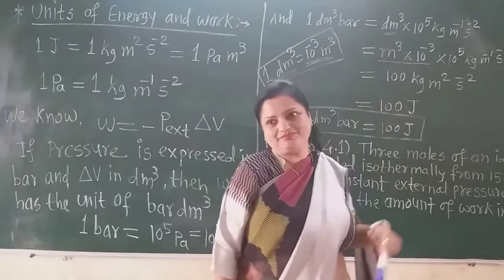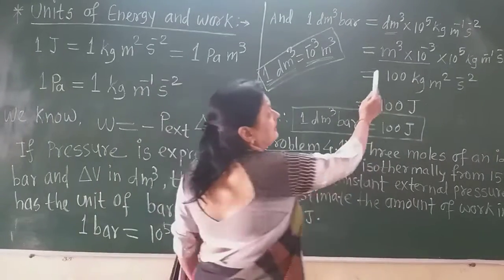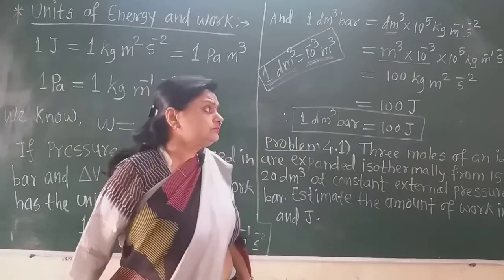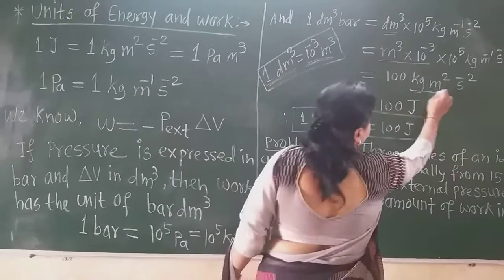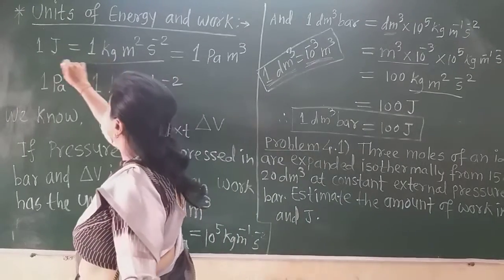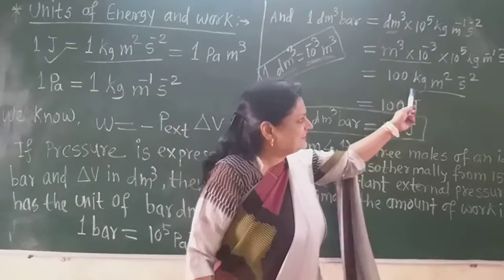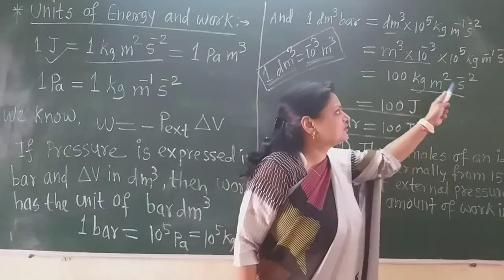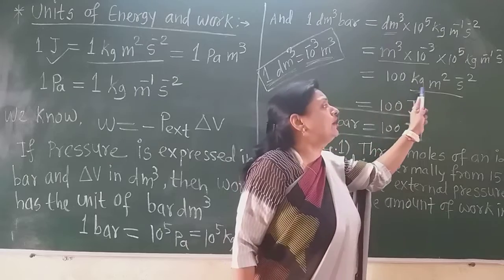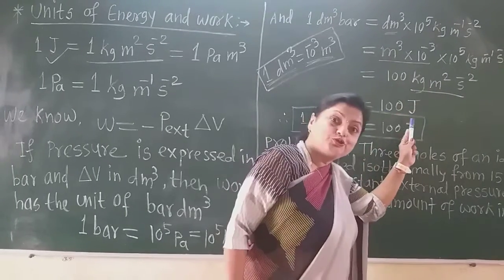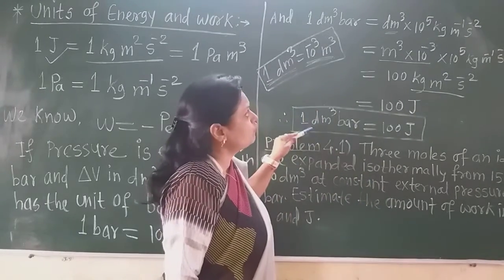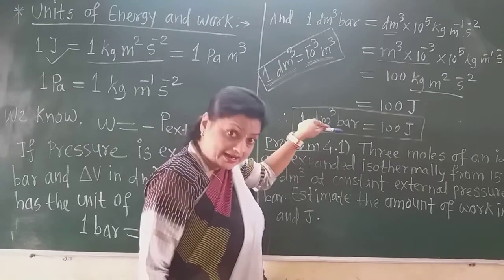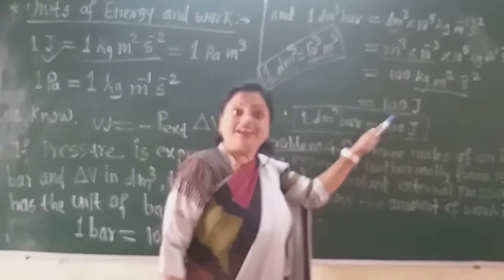10 raised to 2 means 100. So this quantity becomes 100 kilogram meter squared per second squared. We know that kilogram meter squared per second squared is 1 Joule. So 100 kilogram meter squared per second squared means 100 Joules. Therefore, the important conversion to remember is: 1 decimeter cube bar equals 100 Joules.